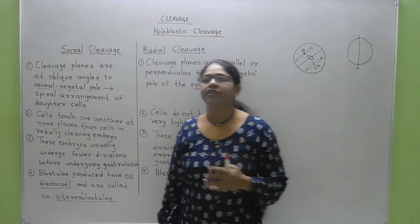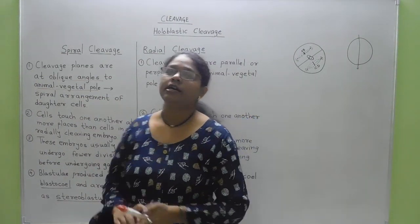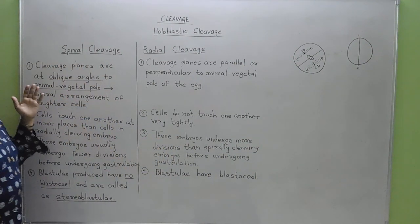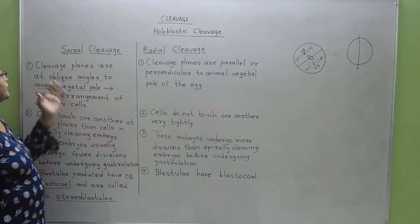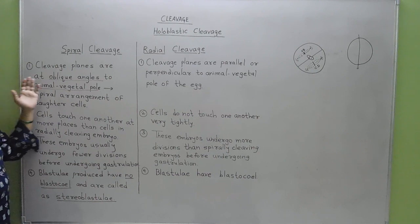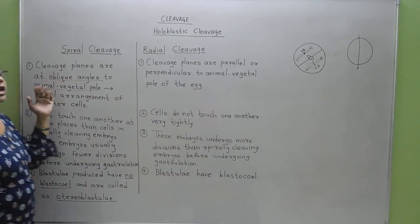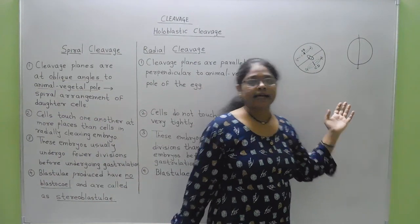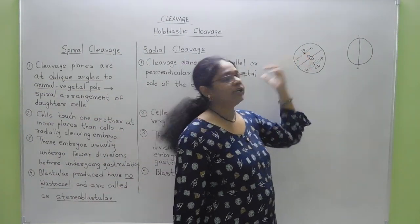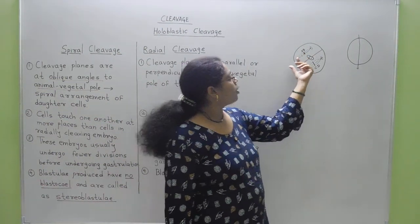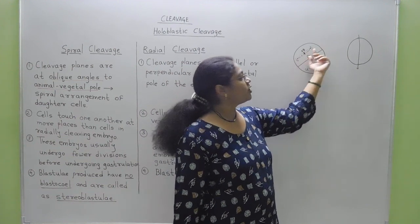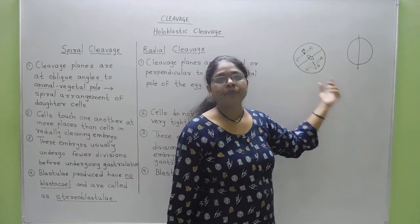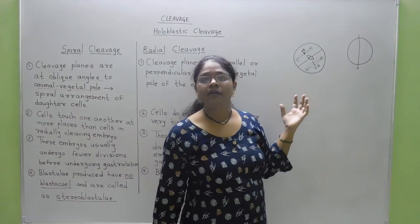The difference between spiral cleavage and radial holoblastic cleavage: in spiral cleavage, the cleavage planes are at oblique angles to the animal-vegetal pole. As shown in the diagram, the cleavage planes are placed diagonally in the spiral cleavage.